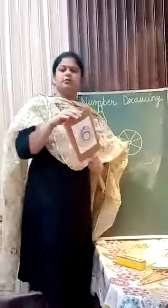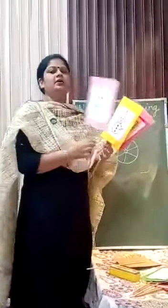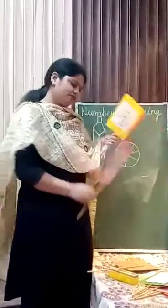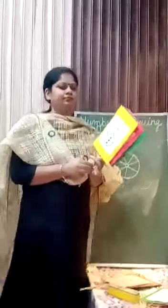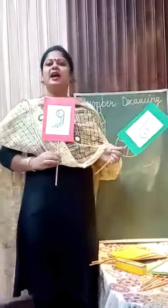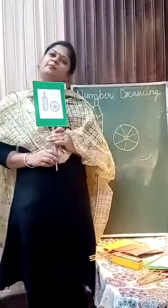Now let us revise again. Number 6 — snail. Number 7 — rat. Number 8 — snowman. Number 9 — caterpillar. And number 10 — baseball.